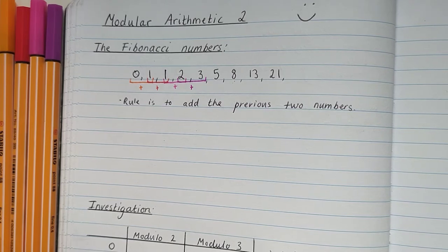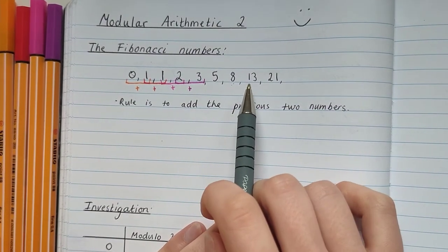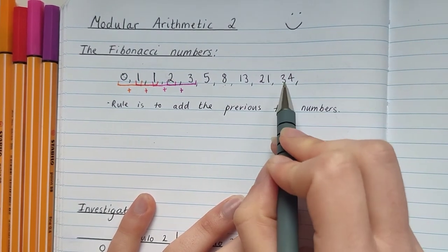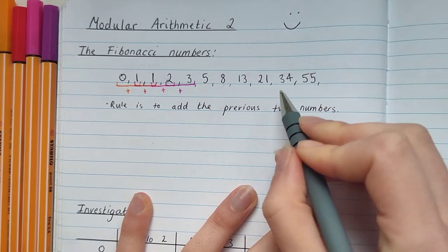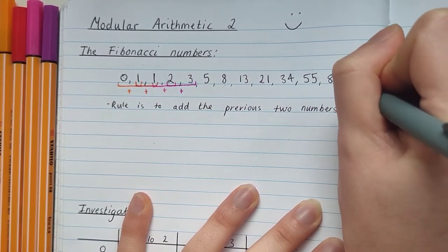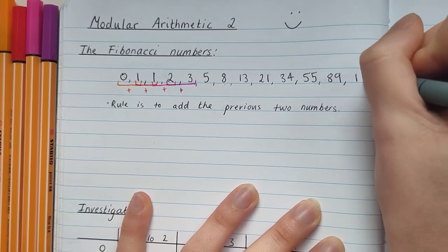Cool. So let's have a look at the next 4 numbers then. To get the next one we do 13 plus 21 to get 34, 21 plus 34 to get 55, 34 plus 55 to get 89, and 55 plus 89 to get 144.